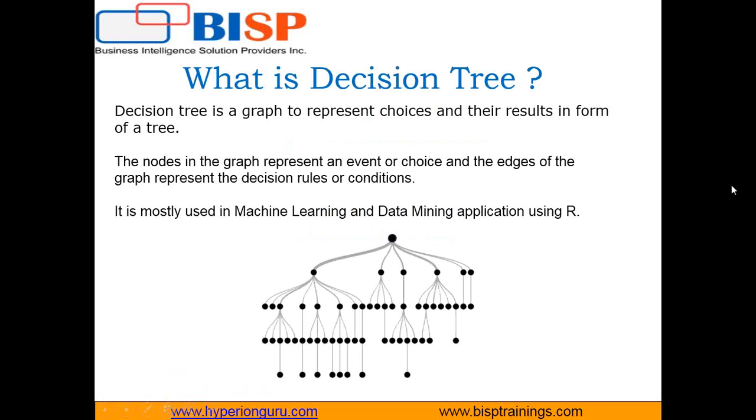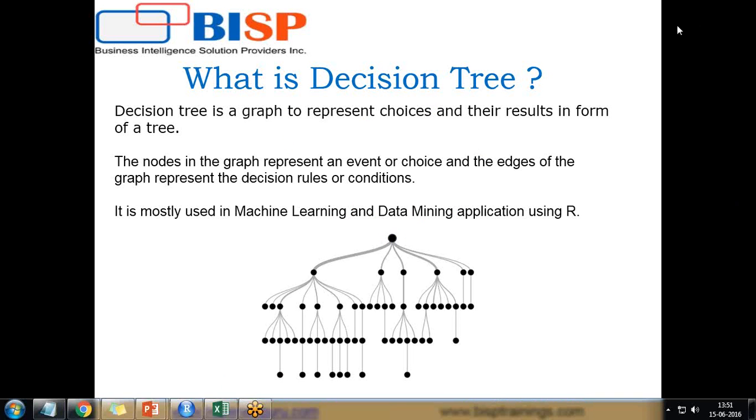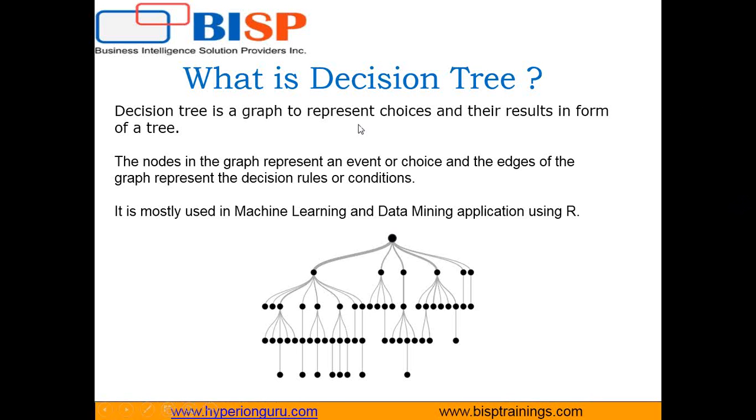Decision tree, as the name indicates, is in tree structure with leaves and branches. It's a graph to represent choices and their results in form of a tree. It's one of the oldest and simplest machine learning algorithms, a type of supervised learning algorithm with predefined target variables that is mostly used in classification problems.